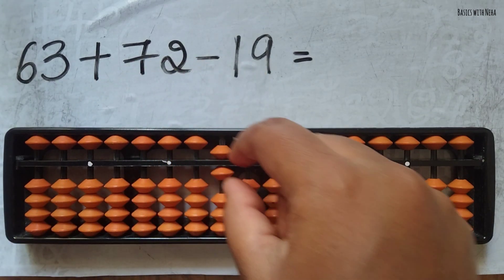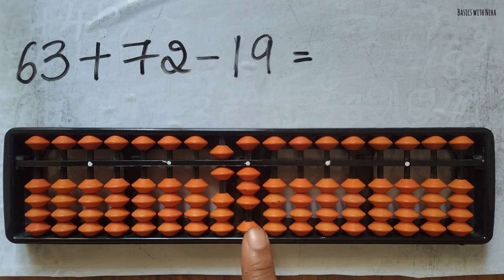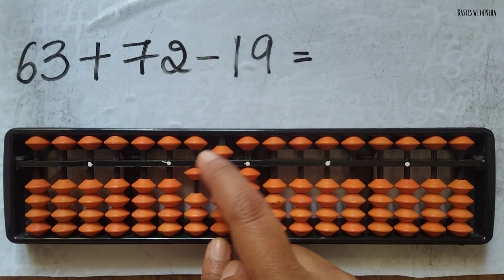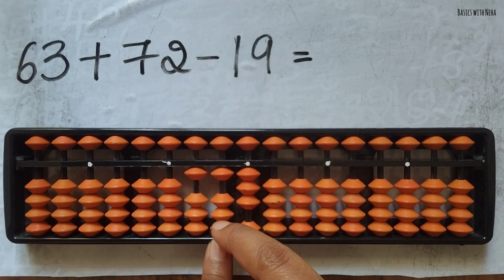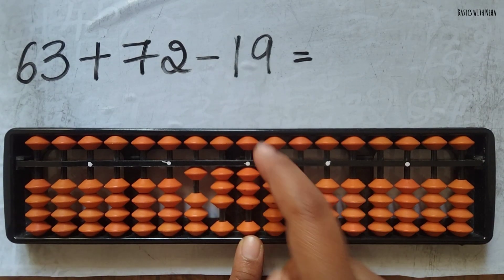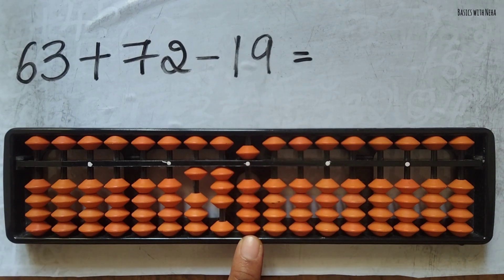First take 63. Now we need to add 72. To add 7 here, we have to use the combination formula which is plus 10 minus 5 plus 2. And to add 2, use the small friends formula which is plus 5 minus 3.